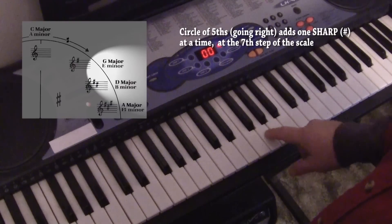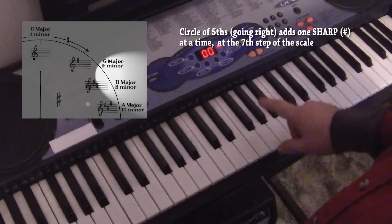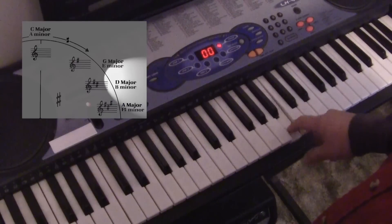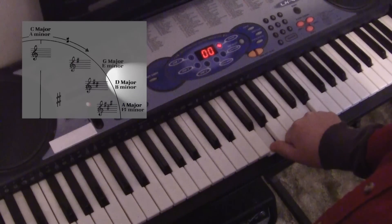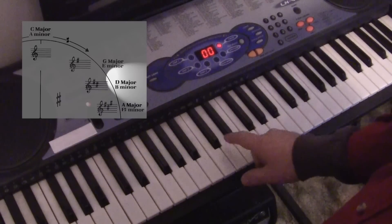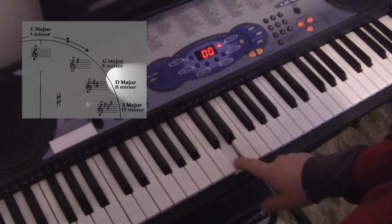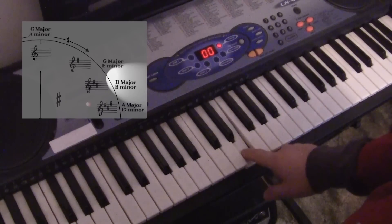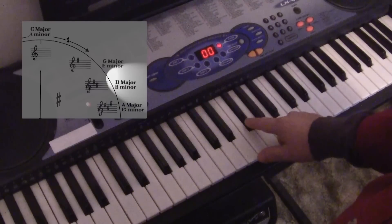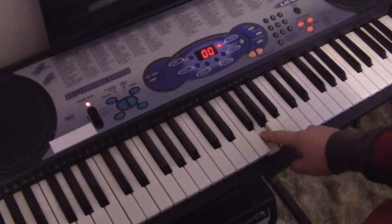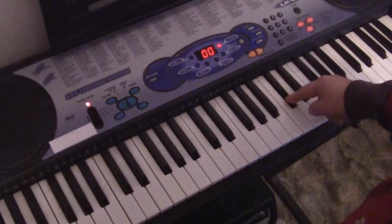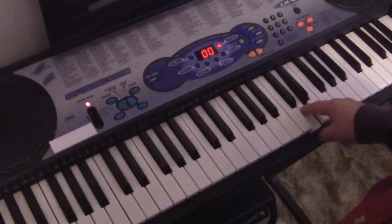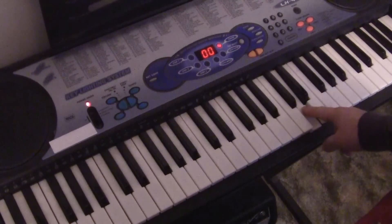The next key we want to look at is a perfect fifth above G — three and a half steps — and we end at the key of D. Let's drop it an octave. Starting here: a whole step, a whole step, then a half step, whole step, whole step, whole step, half step. So now we've got two black keys.